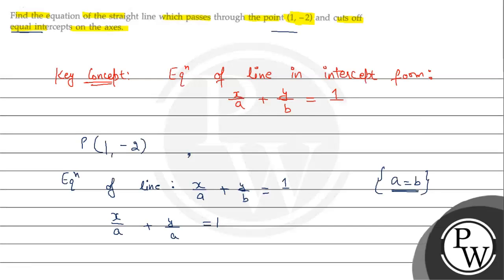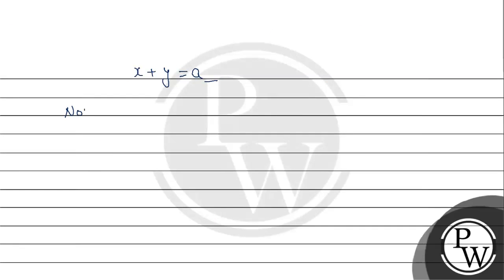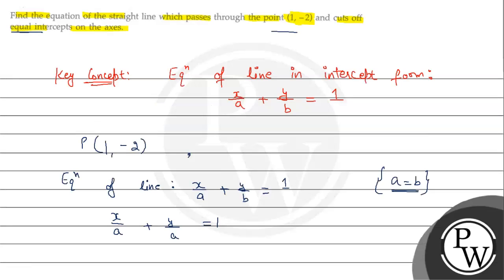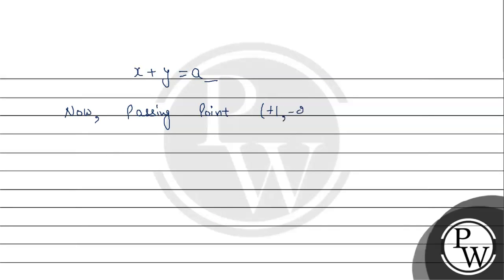Now, passing point (1, -2) given hai. Point ko put karnei in equation number 1. So, it becomes: x ki value replace karne se 1, plus y ki value minus 2, equals to a. So, it becomes 1 minus 2 equals to a, which means a equals to minus 1.